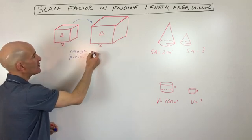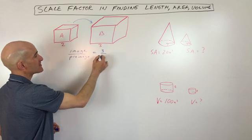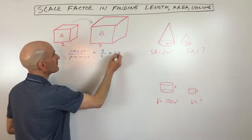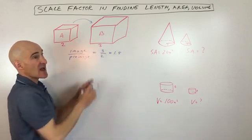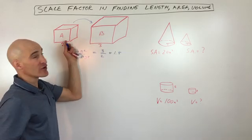So if you're going from A to B, you actually want to take this length, three, divided by this length, two. So you can see that this comes out to 1.5, that the lengths of the sides in figure B are going to be one and a half times longer than in figure A.